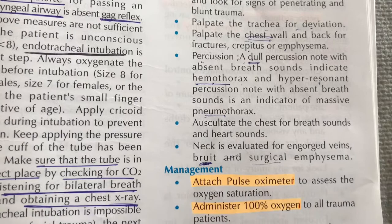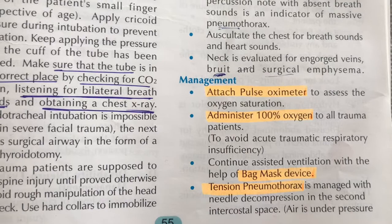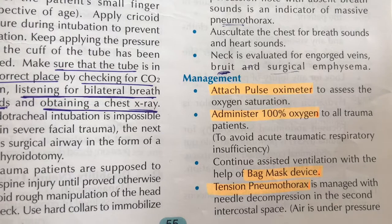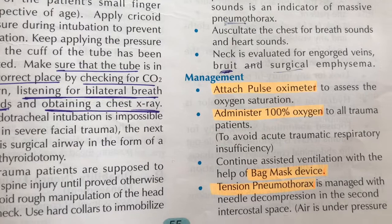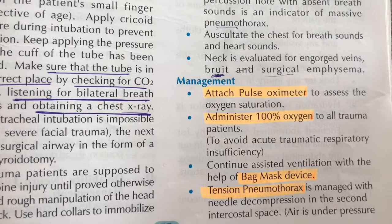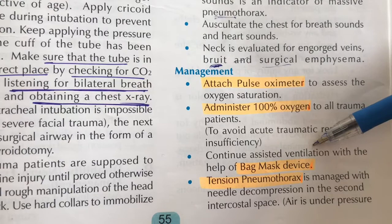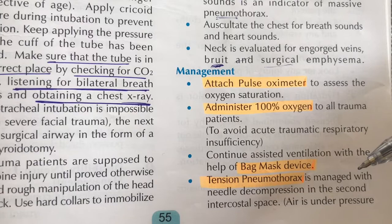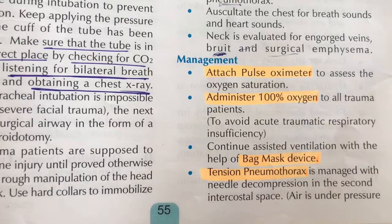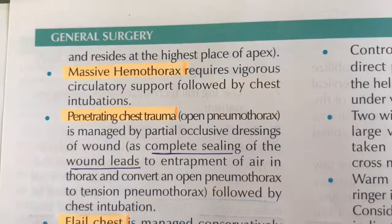For management of breathing problems, we first assess oxygen saturation. If oxygen saturation is decreased below 95%, we attach pulse oximetry and administer 100% oxygen to prevent acute respiratory insufficiency. We provide assisted ventilation with a bag-mask device. For tension pneumothorax, we perform needle decompression in the second intercostal space to remove trapped air.